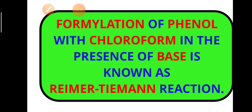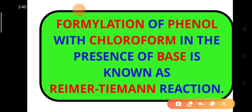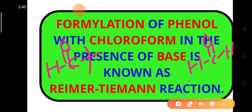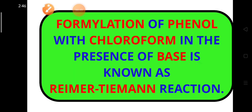We need to know what formylation means. Formylation means addition or substitution of the formyl group. The formyl group is the HCO group. We can observe this formyl group in formaldehyde, which is HCOH, and in formic acid, which is HCOOH. So addition or substitution of this HCO formyl group is known as formylation.